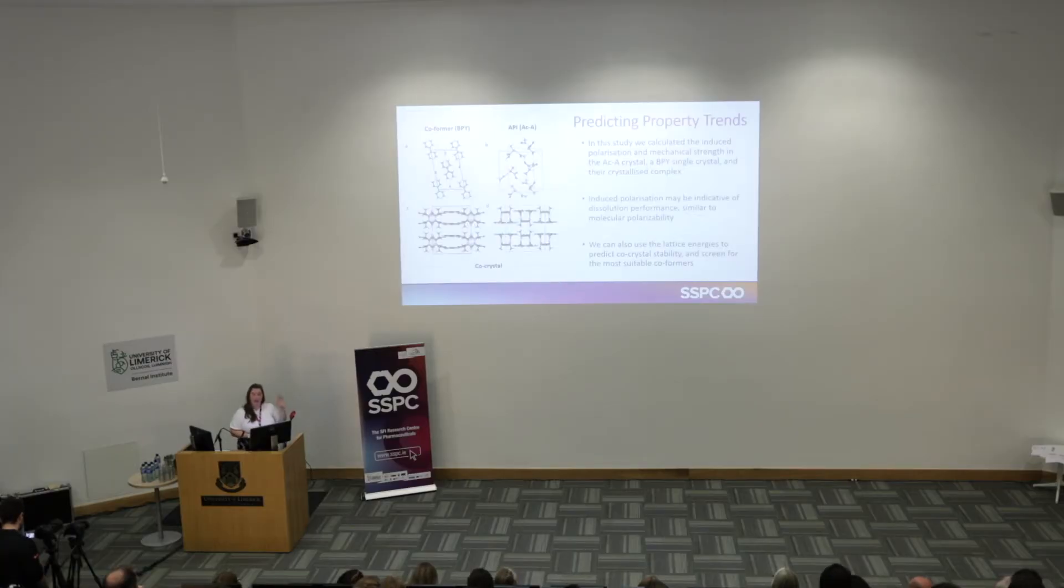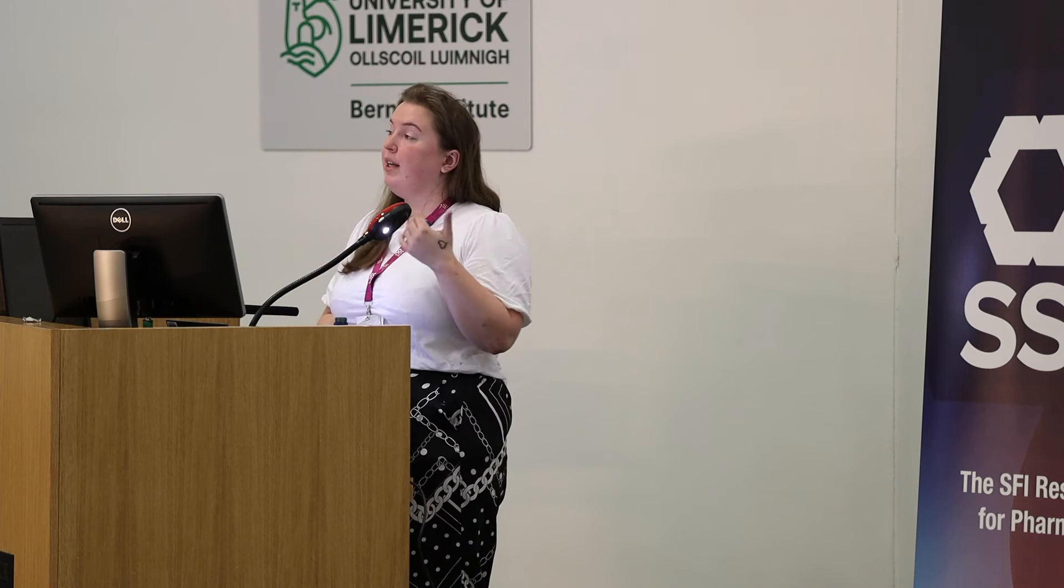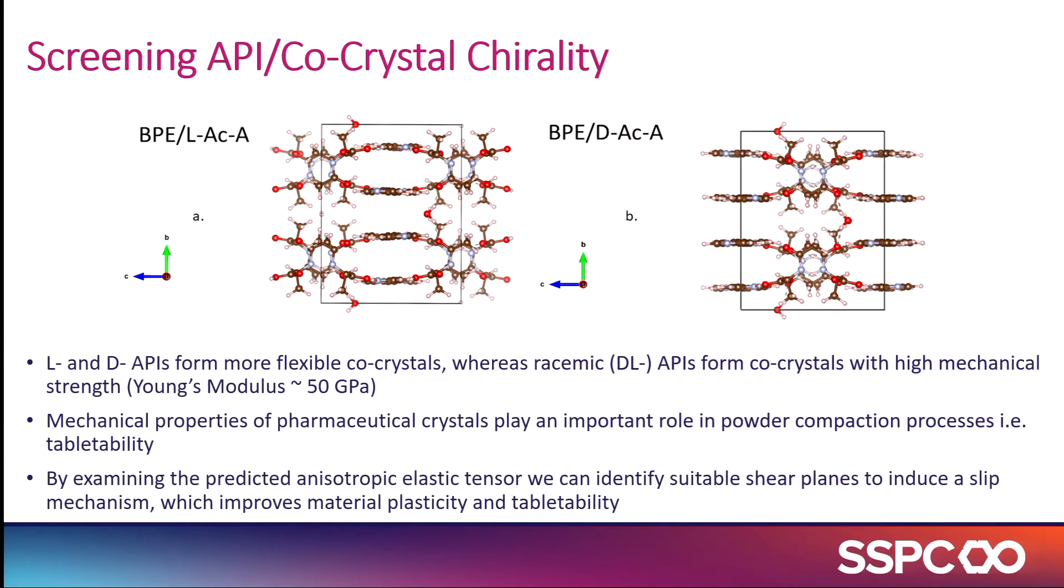In terms of trends, this is a case study to show how we can track how single API crystals, co-former crystals, and then the fully crystallized together co-crystal—how properties track through. That's constantly trying to build up not just what's happening and what the number is, but what's giving rise to that property. We can also look at things like chirality. We've seen a huge influence on the difference between L and D enantiomers, and also racemic crystals. If you're looking for a very mechanically stable polymorph, generally we always start with our L enantiomers. But for racemic crystals, we see a massive jump in mechanical properties. We've seen Young's modulus values of up to 50 gigapascals, and that's both modeling and experimental.